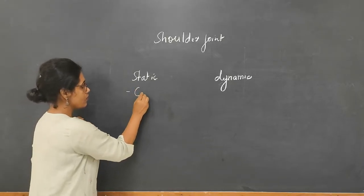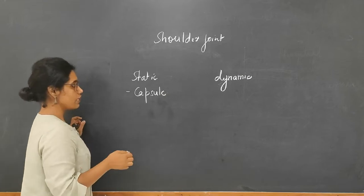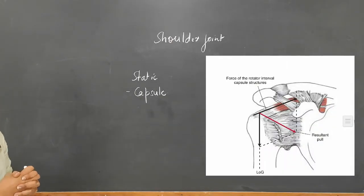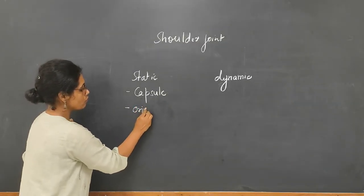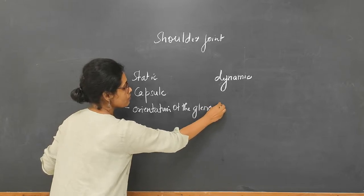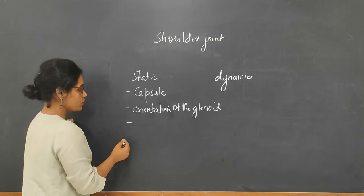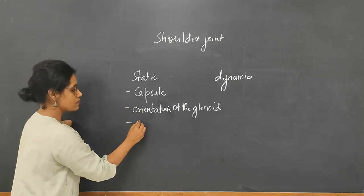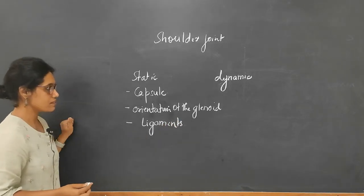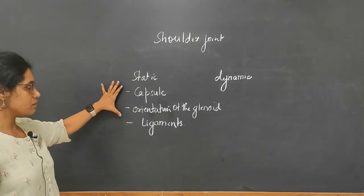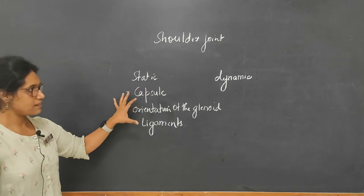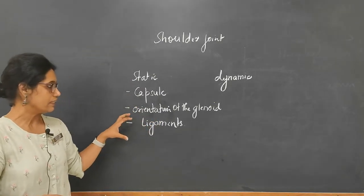When we come to static components, the major factors contributing to shoulder stability are: first, the capsule, which creates a negative intra-articular pressure that keeps the joint surfaces together. Second, the orientation of the glenoid — which is oriented slightly superiorly, preventing inferior instability. Third, the ligaments surrounding the shoulder that contribute to passive stability. These three — capsule, glenoid orientation, and ligaments — summarize the static stabilizers.